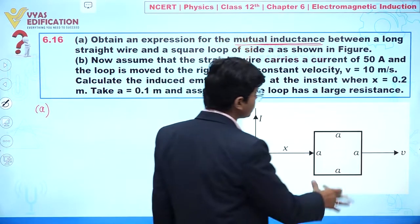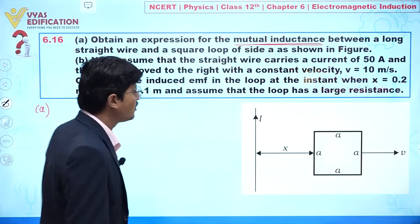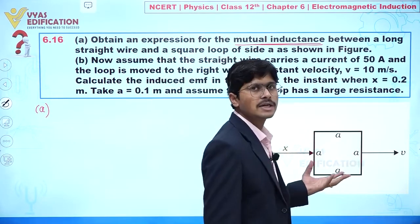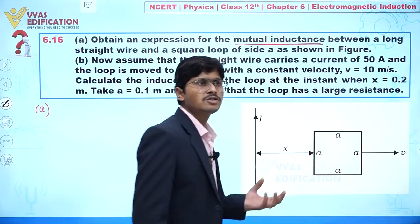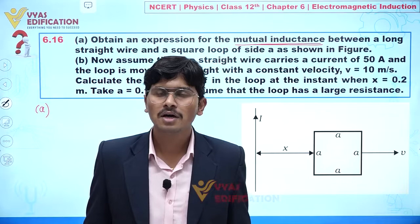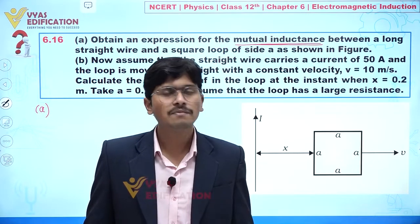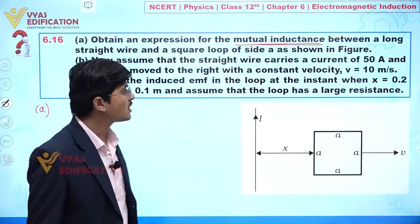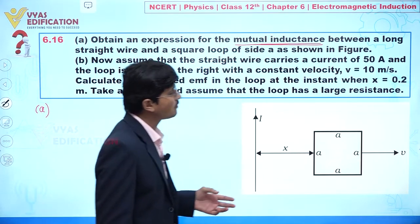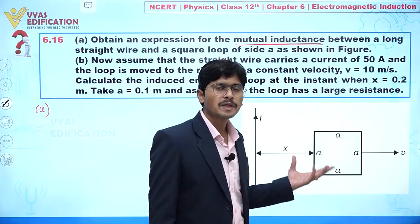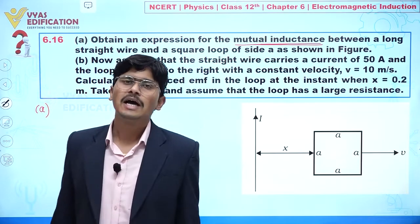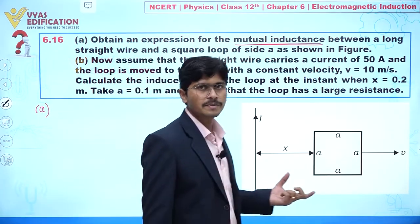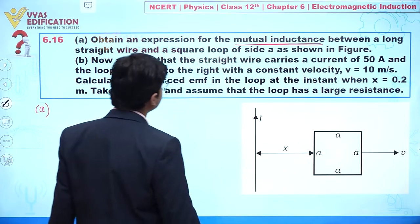To find mutual inductance, there is a relation between current and magnetic flux: φ = MI. So our sole objective is to first calculate the flux, and for magnetic flux we need the magnetic field.